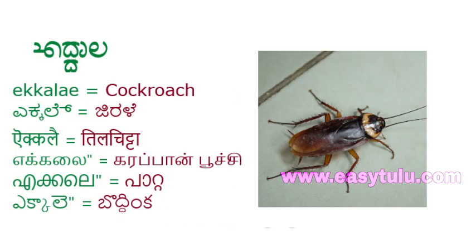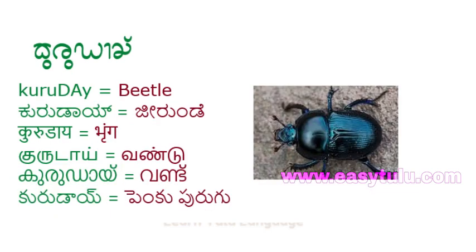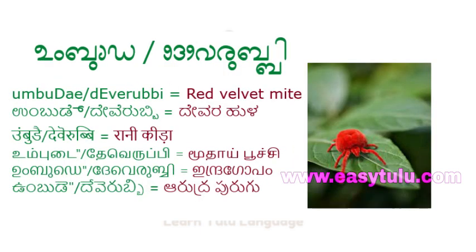Ecle means Cockroach. Umbudu or Dewi Rupi means Red Velvet Mite.